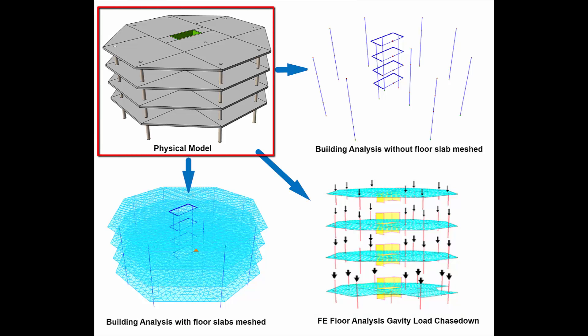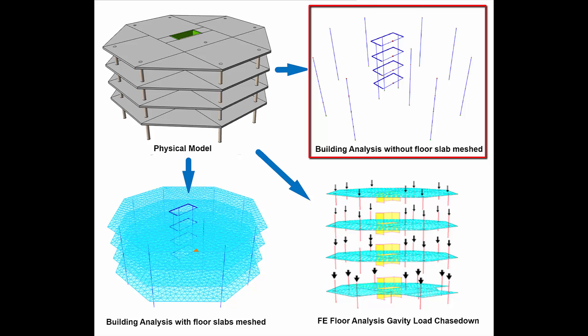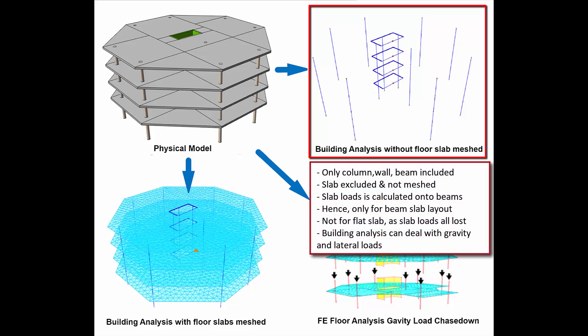This example physical model is a flat slab model supported by columns and a lift core wall, with a beam between the lift core walls. The first analysis method is building analysis without including the slab by meshing. The analytical model is a 3D model of all stories consisting only of frame members — that is, walls, columns, and beams — with slabs excluded. Building analysis is capable of analyzing both gravity and lateral loads as the analytical model includes all elements from top to bottom. However, this analysis method is wrong for a flat slab model, as slab loads cannot be captured by the columns and walls, meaning the flat slab loads will be completely lost.